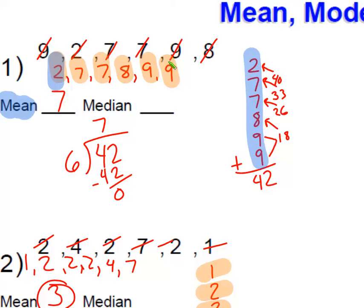So we have a 2, we have a 7, and in the middle we have a 7 and an 8. So you could do this two ways. You could say our median is 7 and 8. We have them both. Or you could say it's 7 and a half. Either one is fine.